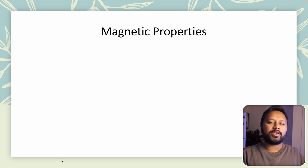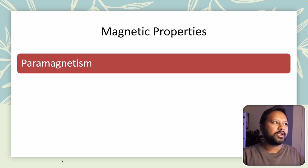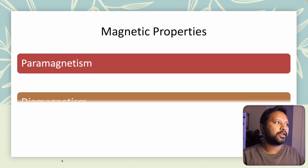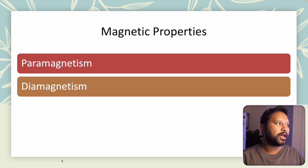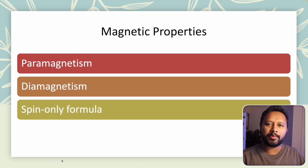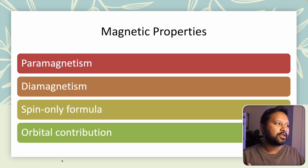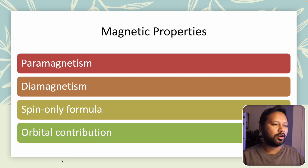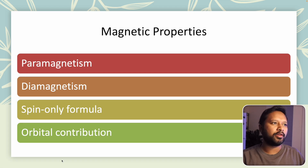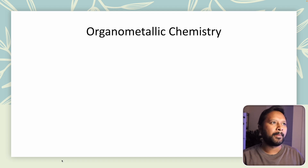Under magnetic properties, you need to study paramagnetism, diamagnetism, the spin-only formula, and orbital contribution in detail, because questions from this topic are very likely in the exam.